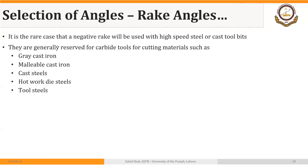In the rare case that a negative rake angle is used with high speed steel — since it is a tough cutting tool material that will not weaken by reducing the included angle as ceramic and carbide tools would — negative rake angles are generally reserved for carbide tools, ceramic tools, and for cutting materials such as gray cast iron, malleable cast iron, cast steels, hard work die steels, tool steels, or hard workpiece materials in general. Thank you.